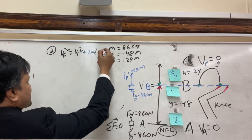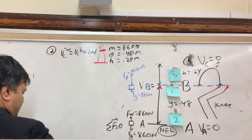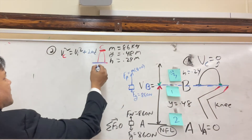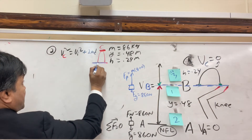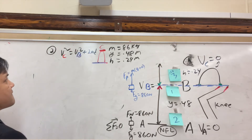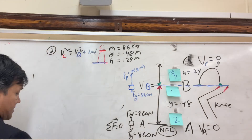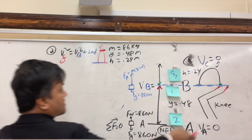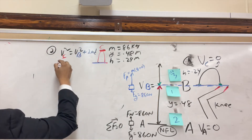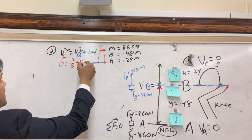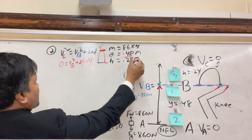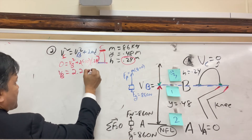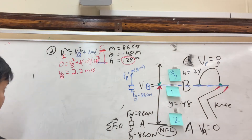Using the parabola from B to C: 0 = vB² + 2(-10)(0.24), solving gives vB = 2.2 meters per second.